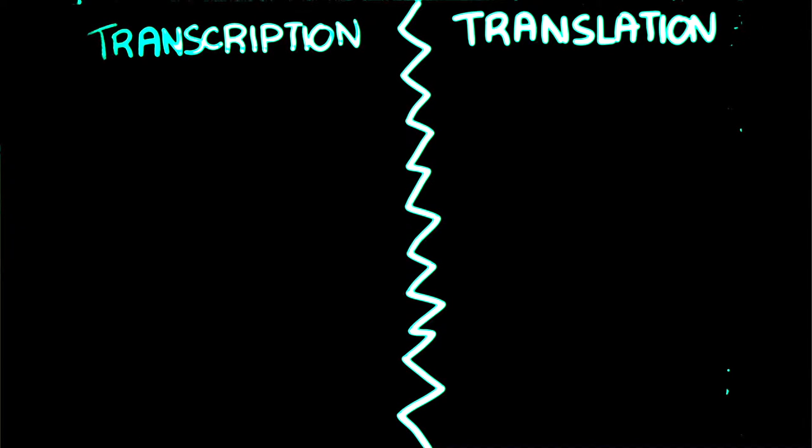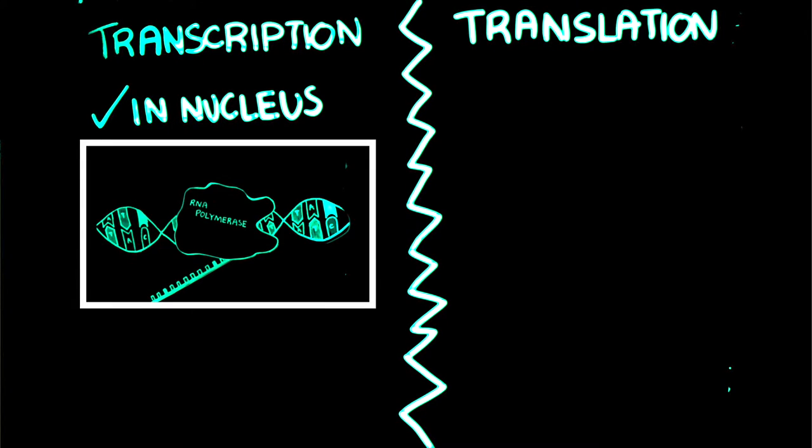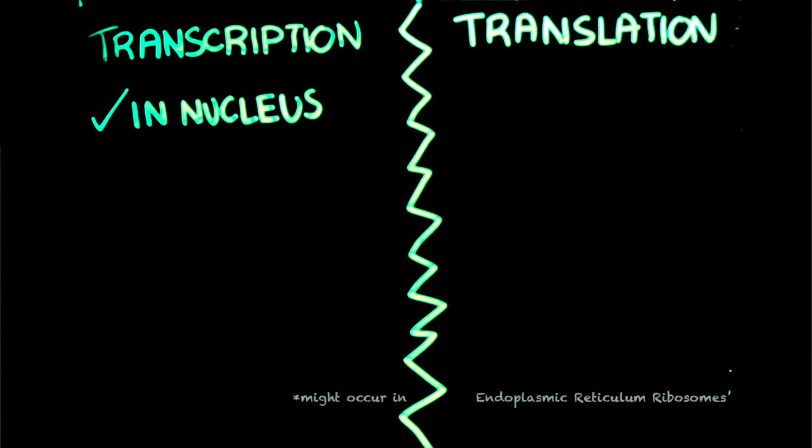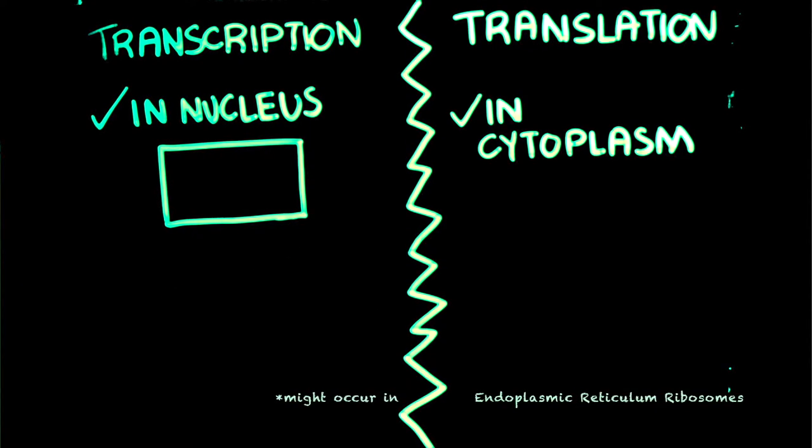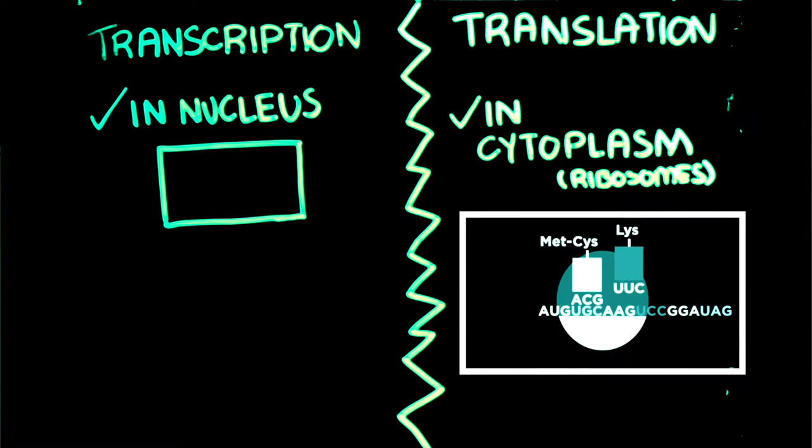In eukaryotic cells, transcription occurs in the nucleus, during which the DNA is used as a guide or a template to create mRNA or messenger RNA. Translation occurs in the ribosomes in the cytoplasm, during which the mRNA is used to create a polypeptide.